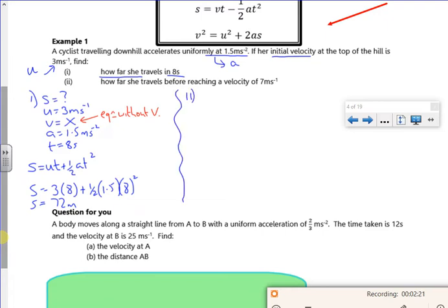Exact same set up on number 2. So it says here how far does she travel before reaching a velocity of 7. So I don't know what the time is now. So S is what I want to know. U is 3 metres per second. V is 7 metres per second, because that's the speed that I'm at. A is 1.5 metres per second squared. T I'm not bothered about.